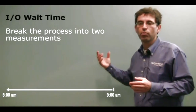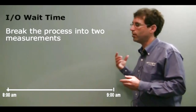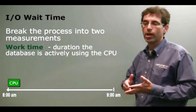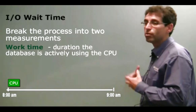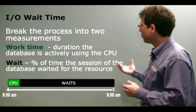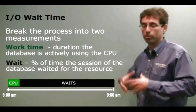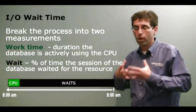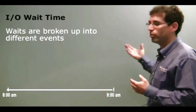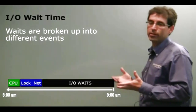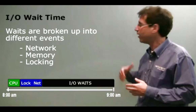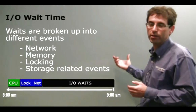The first thing I do is break this job into two measurements. The first measurement is work time, and the second is wait. Work time is the duration or percentage of time that the database was actively using the CPU, executing things on behalf of my activity. Wait, on the other hand, is the time or percentage of time that the database session waited for a resource — such as network, memory, or storage-related events.